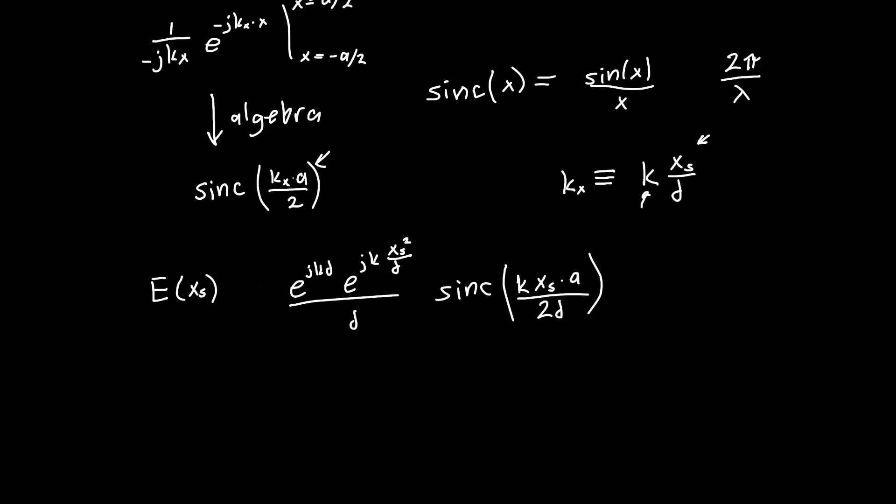I really should write this as proportional to, because we're definitely missing some proportionality constants out front. And typically, we're interested in the magnitude squared of the intensity. And in that case, these phase terms will drop out. I'm going to ignore the d for now, because we're already missing a normalization constant.